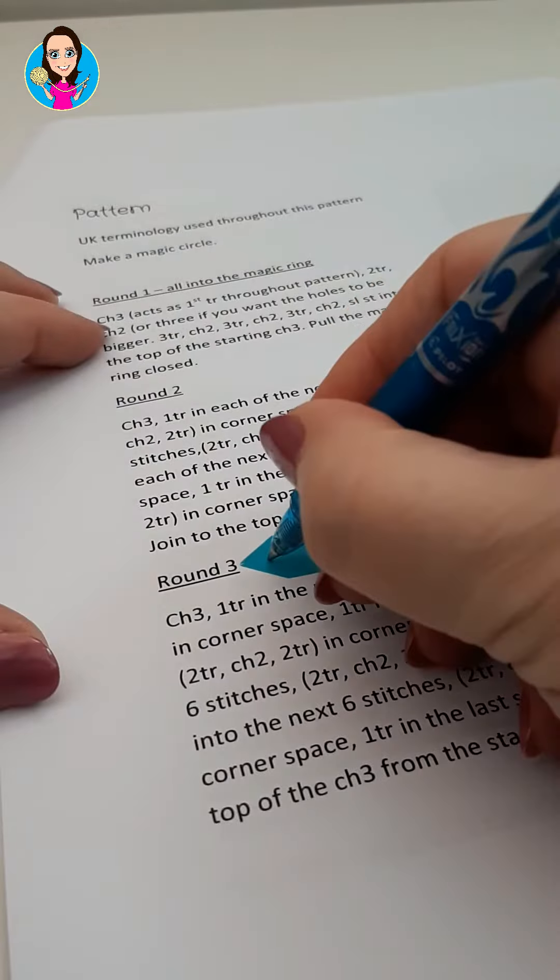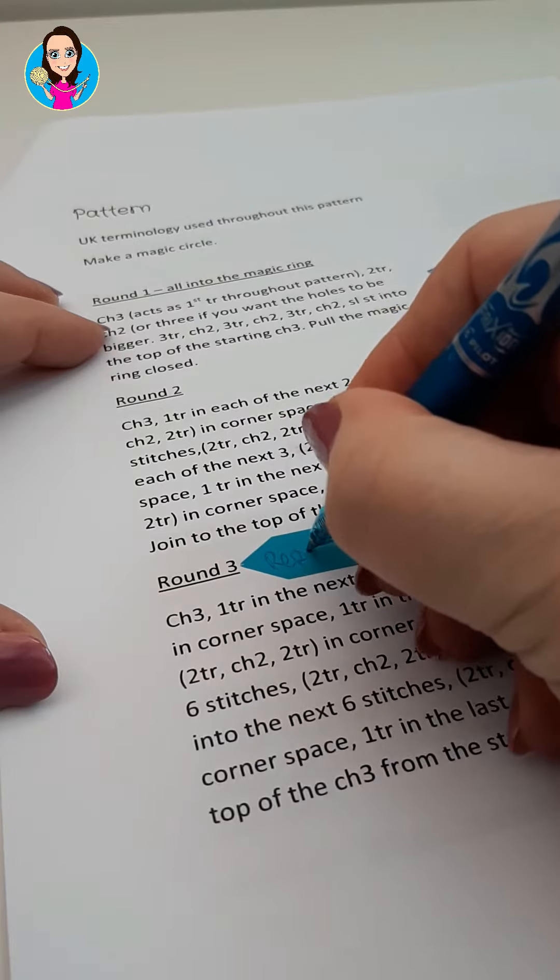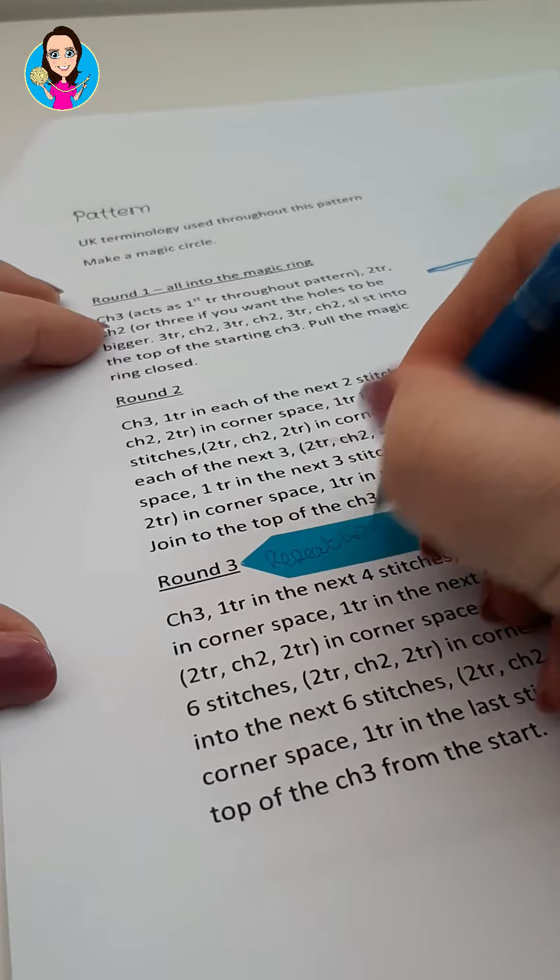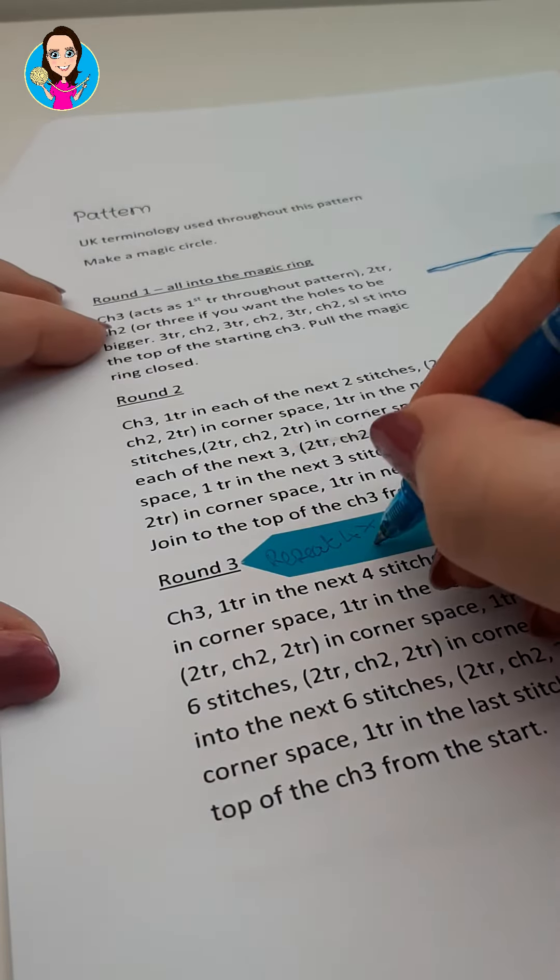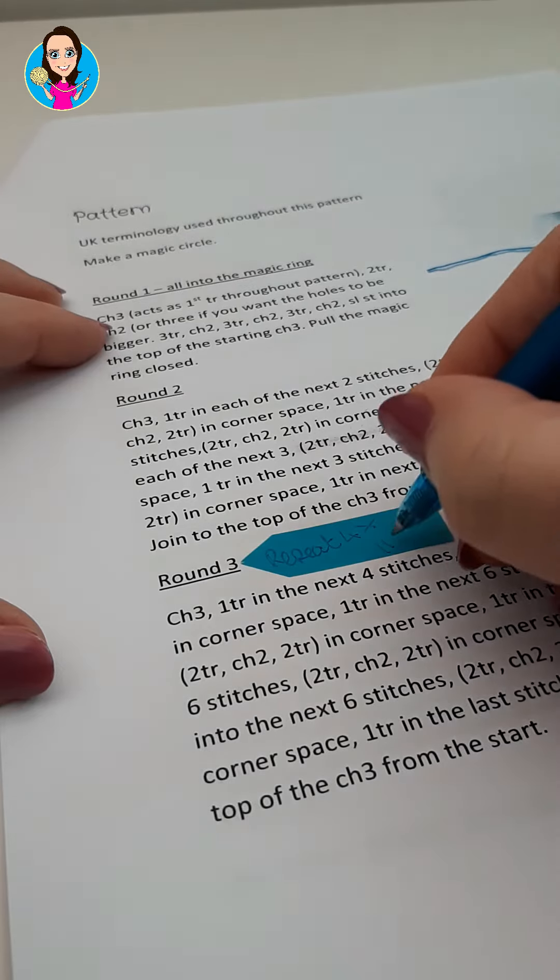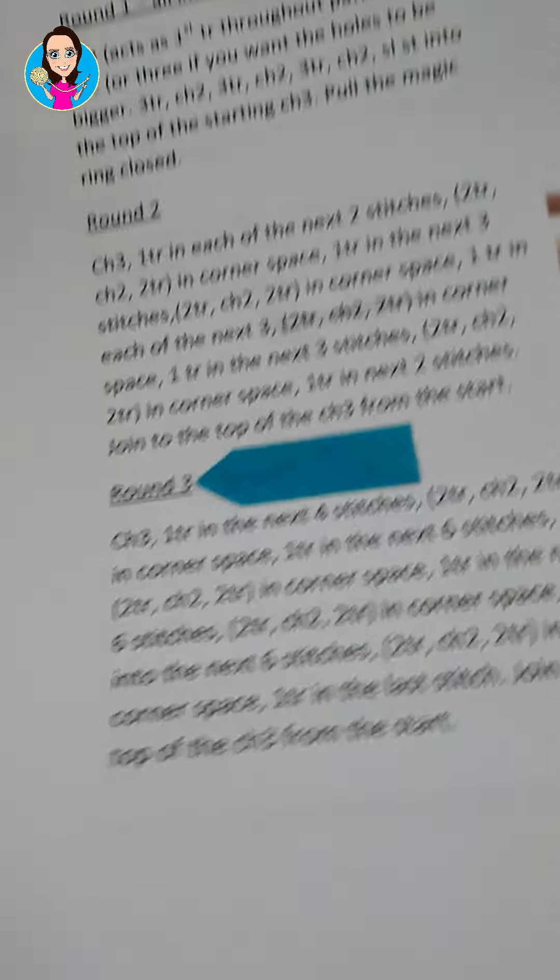You can also write on these, which is really useful. So in this example here I have to repeat round three four times, and as I come to the end of each round I can mark off round one, round two, round three, and round four, and I'll be able to see exactly where I am in the pattern.